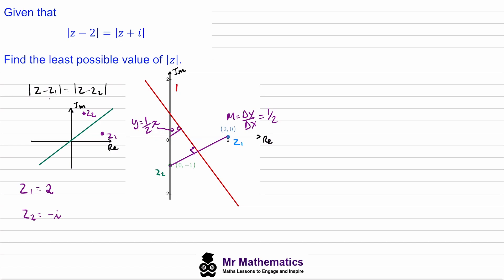We know the gradient will be the negative reciprocal of its perpendicular line, so the gradient will be negative 2. We can work out a point on this line by finding the midpoint of this line segment. The x value will be halfway from 0 to 2, so this will be 1,